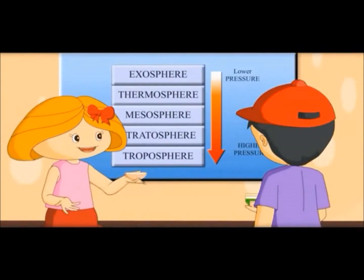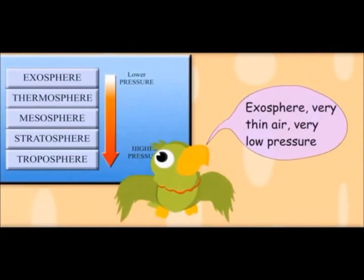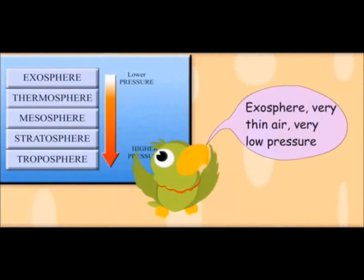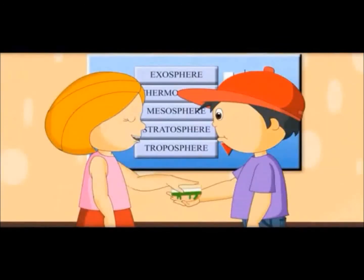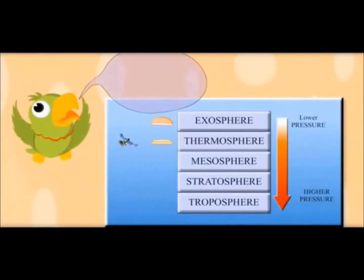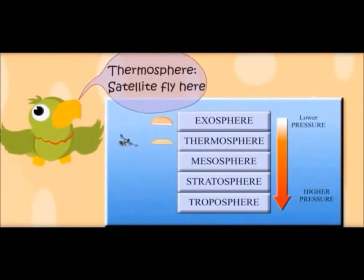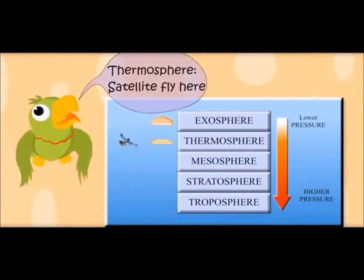Air is very thin here — this is called the exosphere. Very thin air, very low pressure. The next layer is called the thermosphere, and satellites fly in this layer.